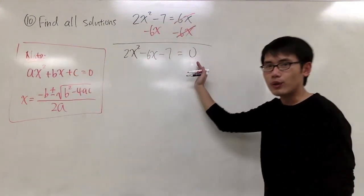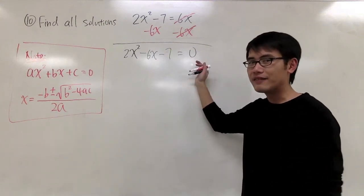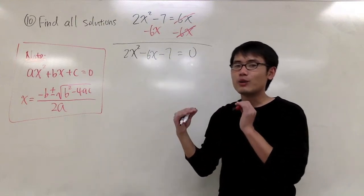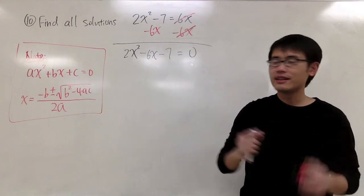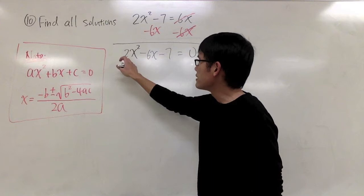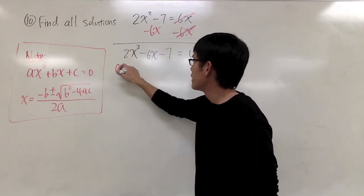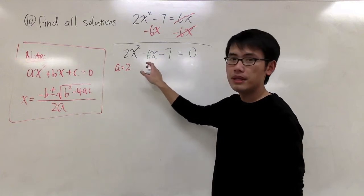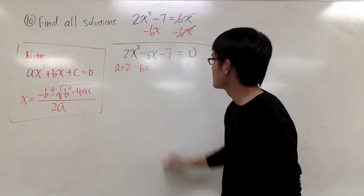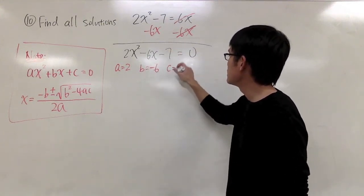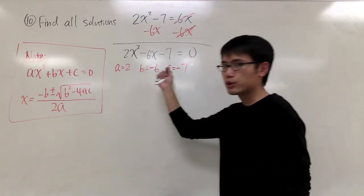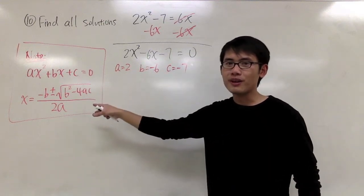That's why we should always try to make one side equal to 0, factor it, and if it's not factorable, use the quadratic formula with the equation already in standard form — identify a, b, and c. Here, a is the number in front of x squared, which is 2. So a equals 2. b is negative 6. And c is negative 7.